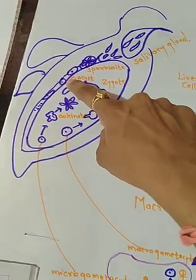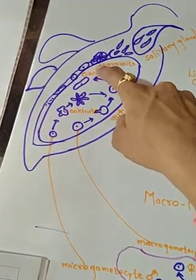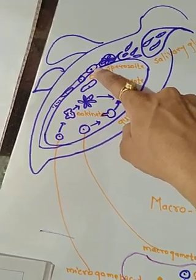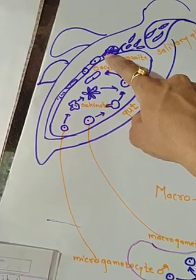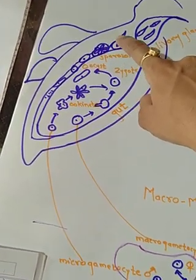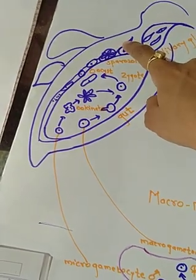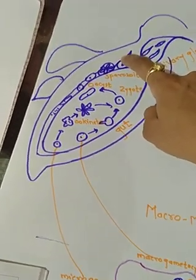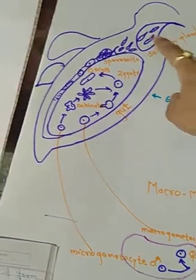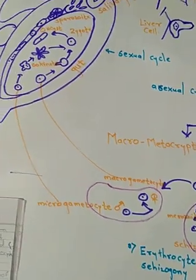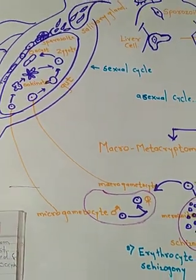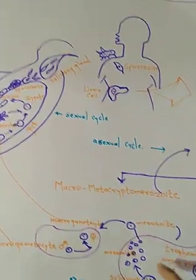Inside the stomach wall, it changes into a cyst-like structure — forming the oocyst. Inside the oocyst, the nucleus divides and forms another structure: the sporozoite. The sporozoites burst out of the oocyst and enter the body cavity of the mosquito, then move into the salivary gland of the mosquito. When this mosquito bites another healthy person, the sporozoites enter the human body and can infect another human.